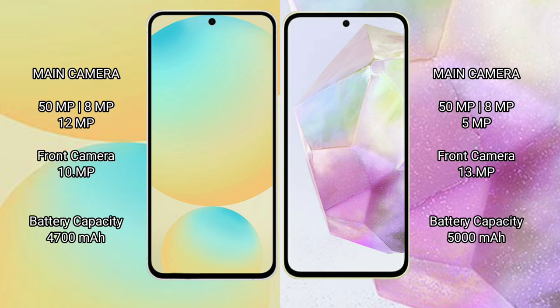The Samsung Galaxy S24 FE features a triple rear camera setup: a 50-megapixel main camera, an 8-megapixel camera, and a 12-megapixel camera. The front camera is 10 megapixels.